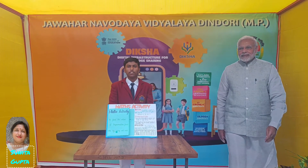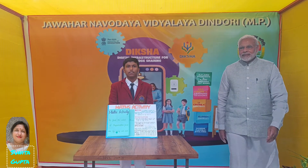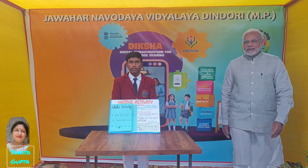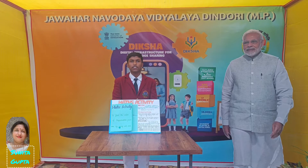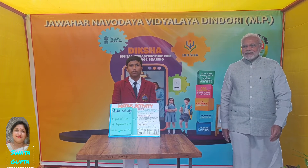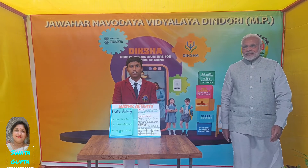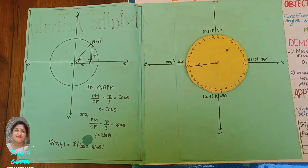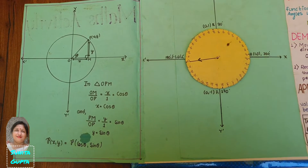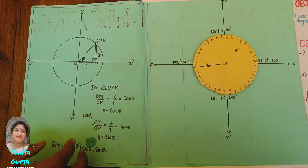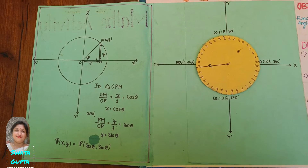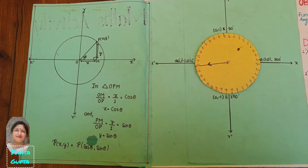Hello everyone, this is Praveen Jaria of class 11th A from JNV Dindani. Today we will demonstrate this model to find the values of sine and cosine functions by using a unit circle. Here we can see that a unit circle is embedded on the XY plane. Now let's find the values of sine and cosine functions using this model.